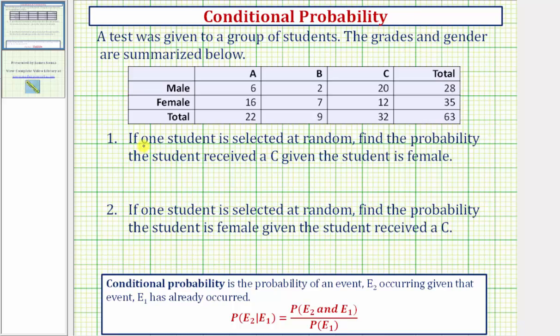So for number one, if one student is selected at random, find the probability the student received a C given the student is female. And number two, if one student is selected at random, find the probability the student is female given the student received a C.